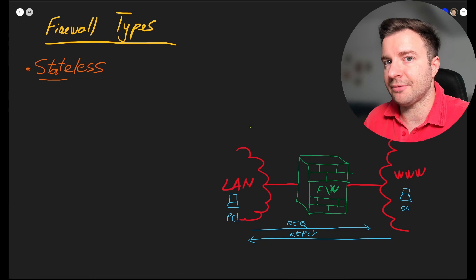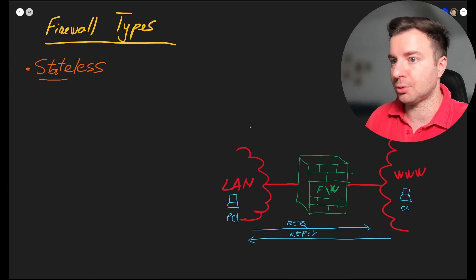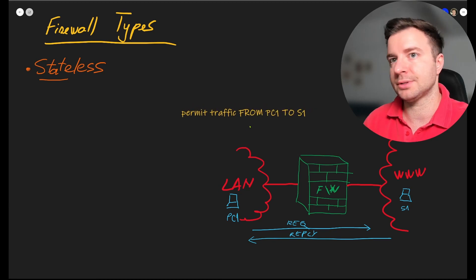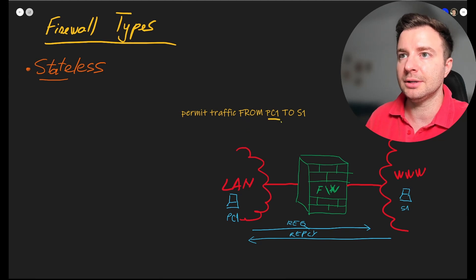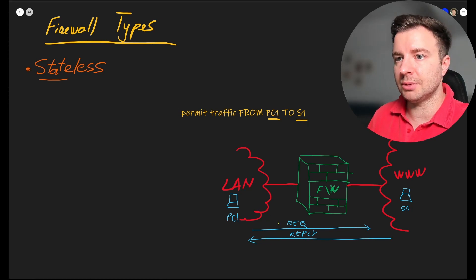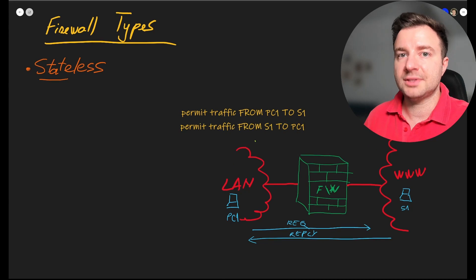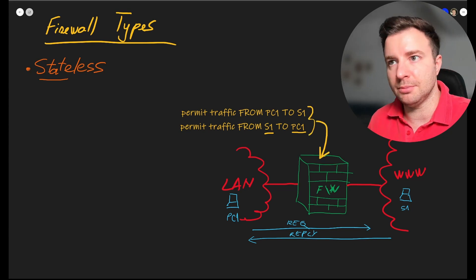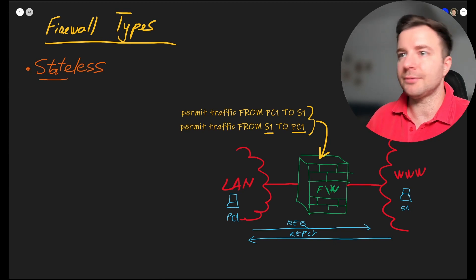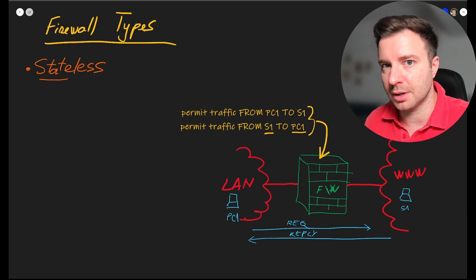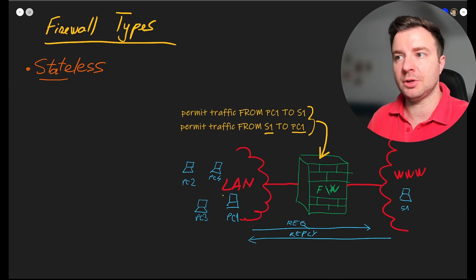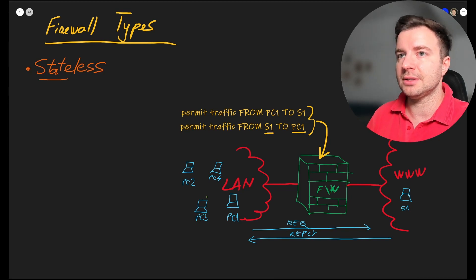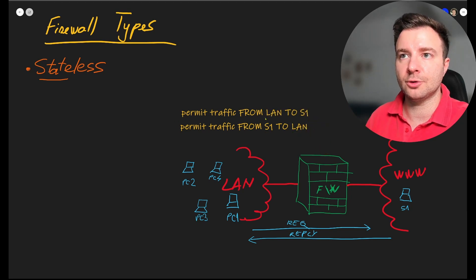The firewall only permits traffic if it has a valid rule. To allow the request from PC1 to S1, we configure a rule: permit all traffic from PC1 to S1. For the reply, we configure another rule: permit traffic from S1 back to PC1. But what if multiple hosts in the LAN want to talk to S1? We could create a rule for each host, or more practically, permit all LAN traffic to S1 and allow return traffic from S1 to anyone in the LAN.